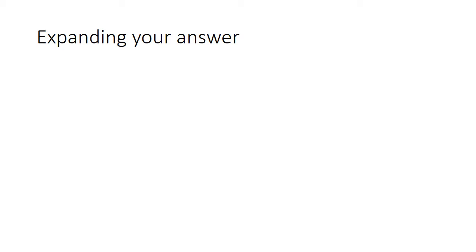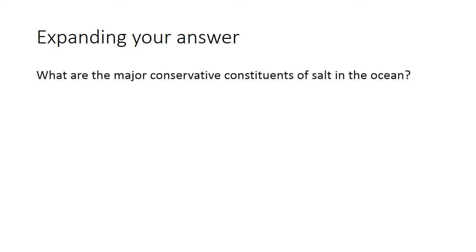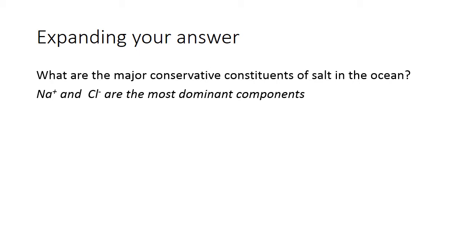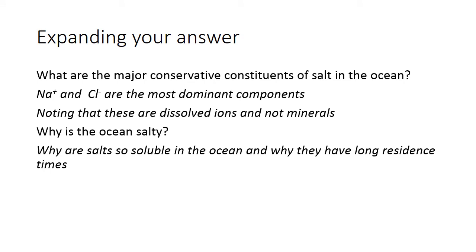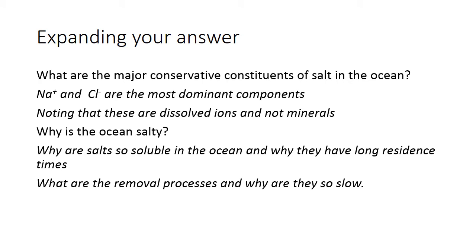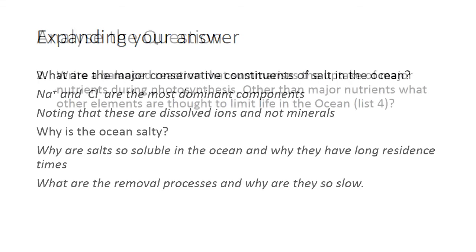To really get the top marks on questions like this, just giving a list of things isn't sufficient. We could say that sodium and chlorine are the most dominant components, and also note that these are dissolved ions and not minerals. Salt isn't made of sodium chloride as a compound — it's made of sodium and chloride ions dissolved in the ocean. Then in the 'why is the ocean salty' part, you could expand by explaining why salts are soluble in the ocean, what properties of water allow it to hold a lot of salt, and what the removal processes are and why they are so slow.